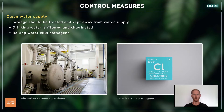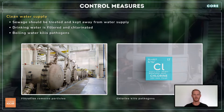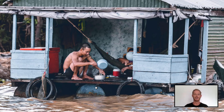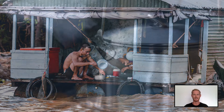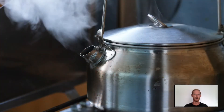Water treatment involves filtration to remove larger particles, and chlorination, which kills the pathogens. Those who don't have access to a treated water supply can boil it instead, as bacteria, viruses, and other pathogens are unable to survive at such high temperatures.